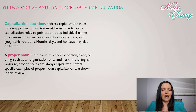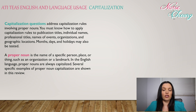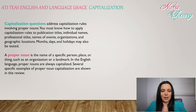A proper noun is the name of a specific person, place, or thing such as an organization or a landmark. In the English language, proper nouns are always capitalized. Several specific examples of proper noun capitalization are shown in this review.